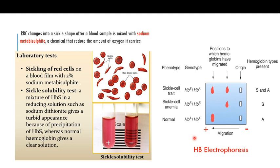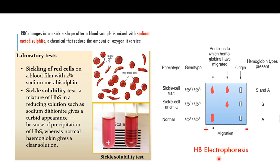The most important diagnostic method for sickle cell anemia is hemoglobin electrophoresis. After a positive sickle solubility test, hemoglobin electrophoresis is performed for careful confirmation. Electrophoresis is a technique in which components are separated from each other based on charge — 'electro' means charge and 'phoresis' means moving charged particles through a porous material. Because this technique is performed for hemoglobin, it is called hemoglobin electrophoresis.